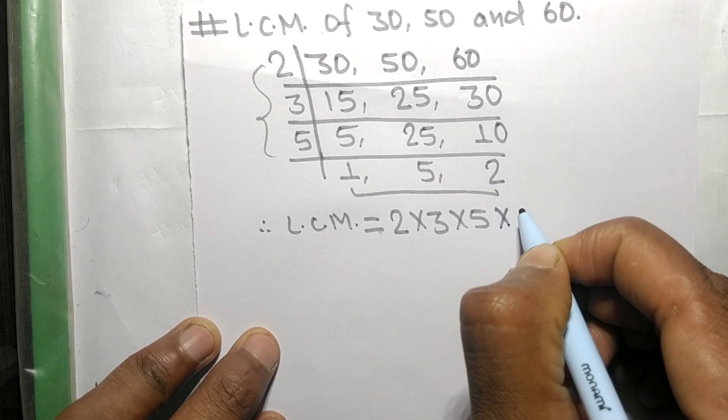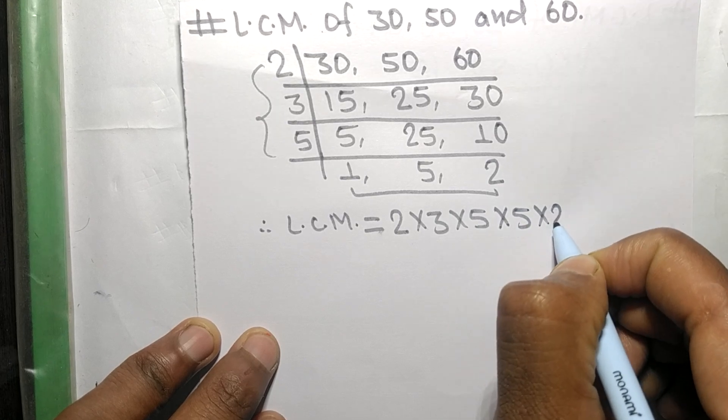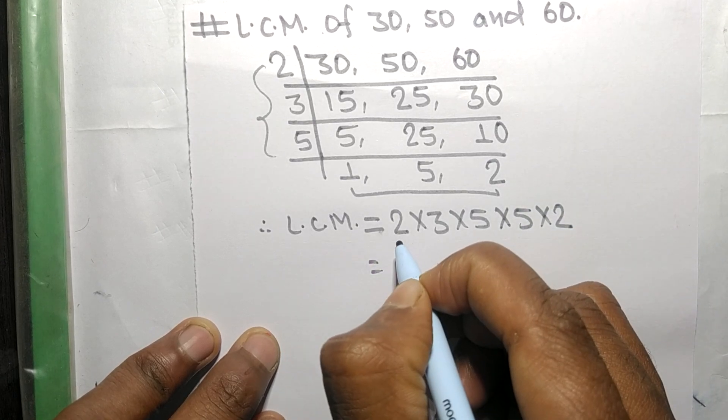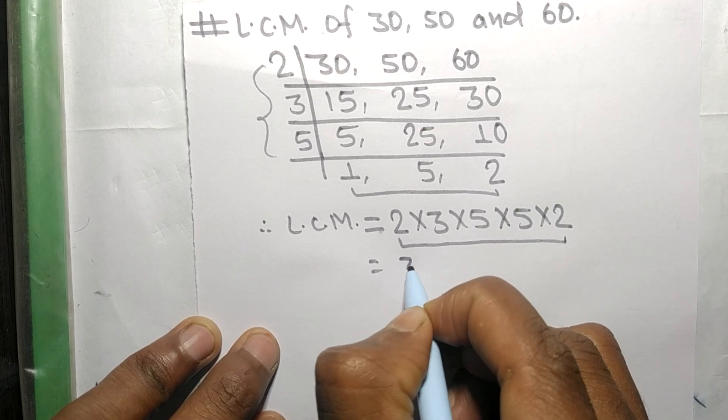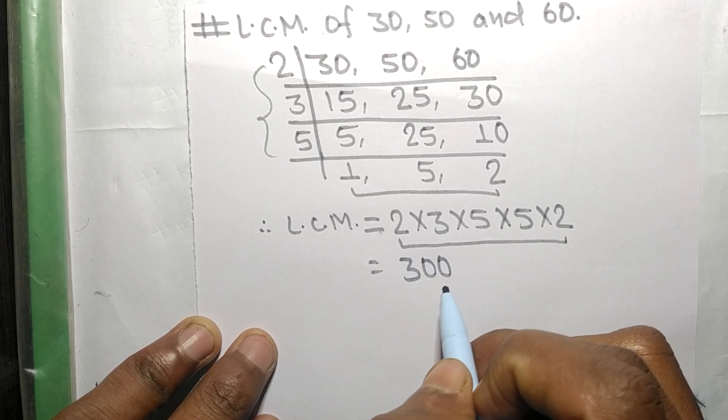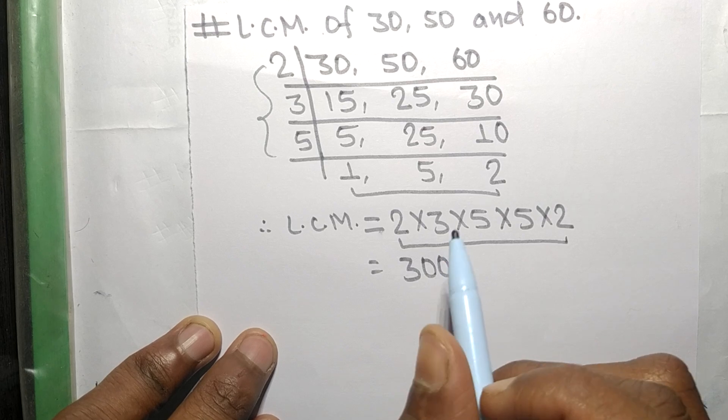So by multiplying all these numbers we get 300. So 300 is the LCM of 30, 50, and 60.